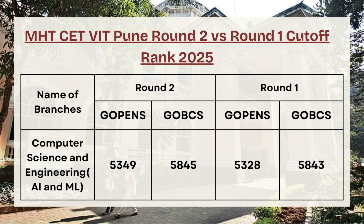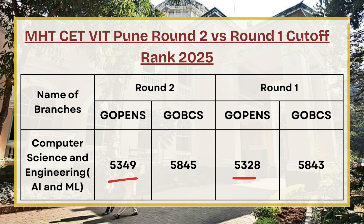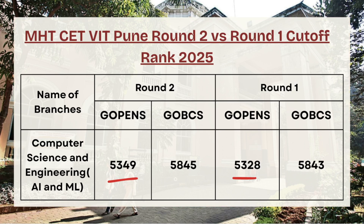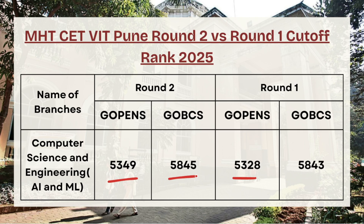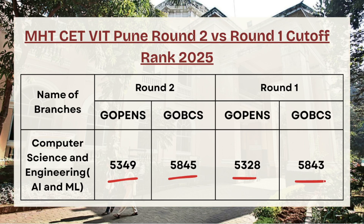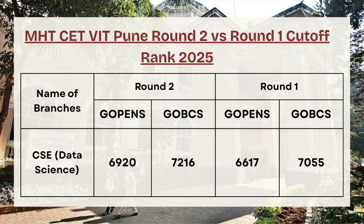Moving ahead, we have Computer Science Engineering for AIML. For G Open category, the cutoff rank is 5,349 in round two whereas in round one it was 5,328. For G OBC category, the cutoff rank was 5,845 for round two whereas in round one it was 5,843 — a very minimal difference between the two rounds.